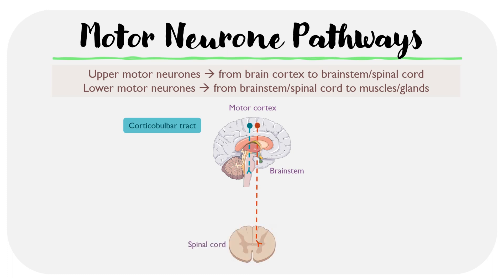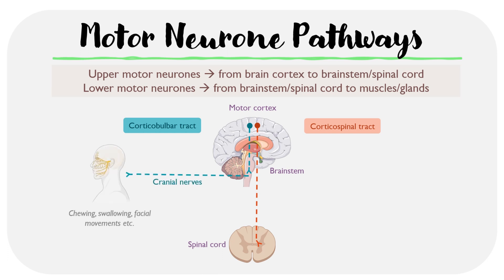The second tract runs from the cortex to the spinal cord and is termed the corticospinal tract. Both of these tracts are what are termed upper motor neurons because they originate from the motor cortex itself. In terms of the lower motor neurons, we have some neurons which run from the brain stem to the muscles within the face, and these are termed the cranial nerves — they're involved in chewing, swallowing, and other facial movements.